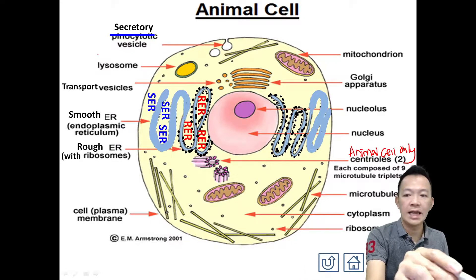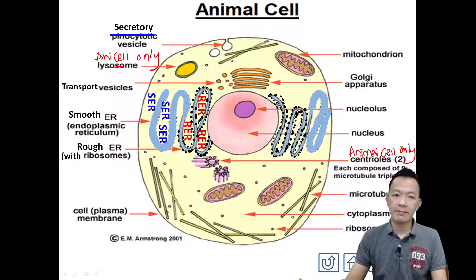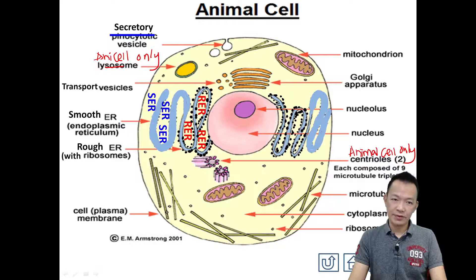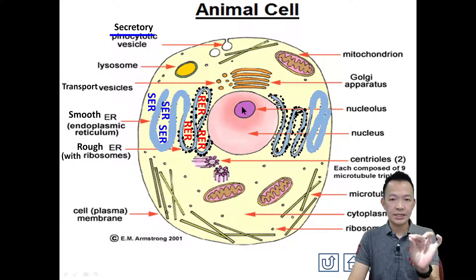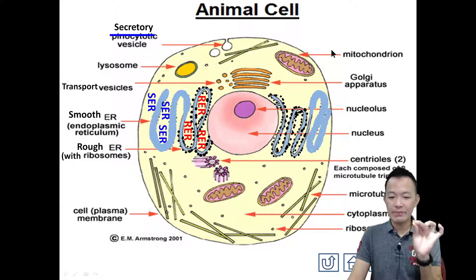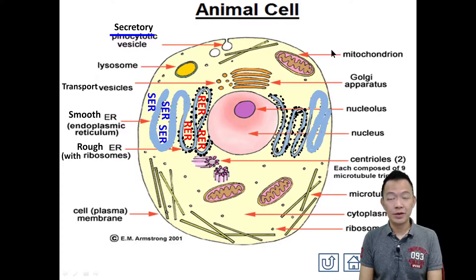只在动物细胞有罢了. Same as here - animal cell only. 自己写满满，animal cell only. So animal cell only. So these are the basic structures and organelles that we have inside the animal cell. 动物细胞里面的一些细胞器还有它的结构. And what to do now?